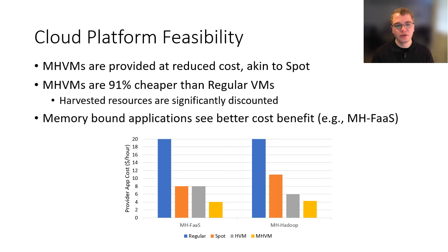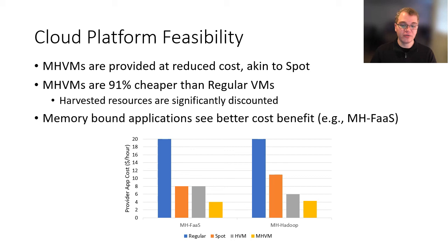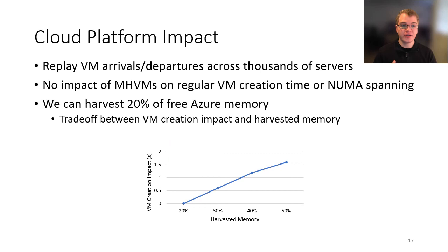We look at the feasibility of running MHVMs from a cost perspective. MHVMs are provided at a discounted cost, similar to spot VMs, making them significantly cheaper than regular VMs. Additionally, harvest resources given to MHVMs at runtime are discounted as well, since we want them to make use of those resources. Memory-bound applications see a significantly better cost benefit on MHVMs — MHFAS is half as expensive to run per hour compared to a spot VM or harvest VM, and far cheaper than a regular VM. Hadoop still benefits, though less so since it's not as memory-bound.